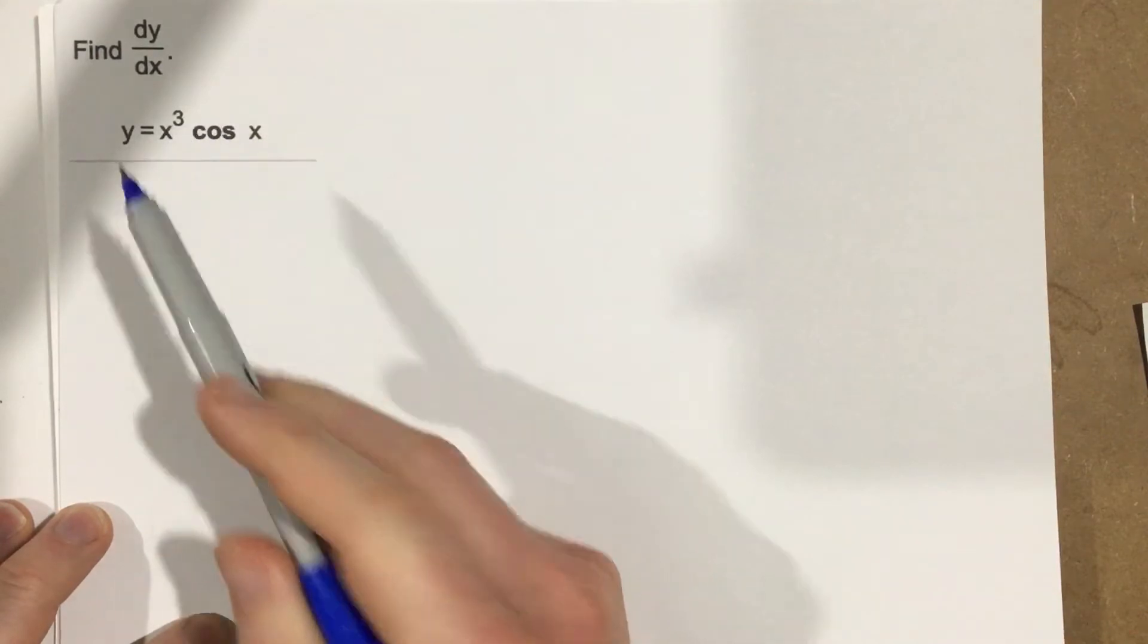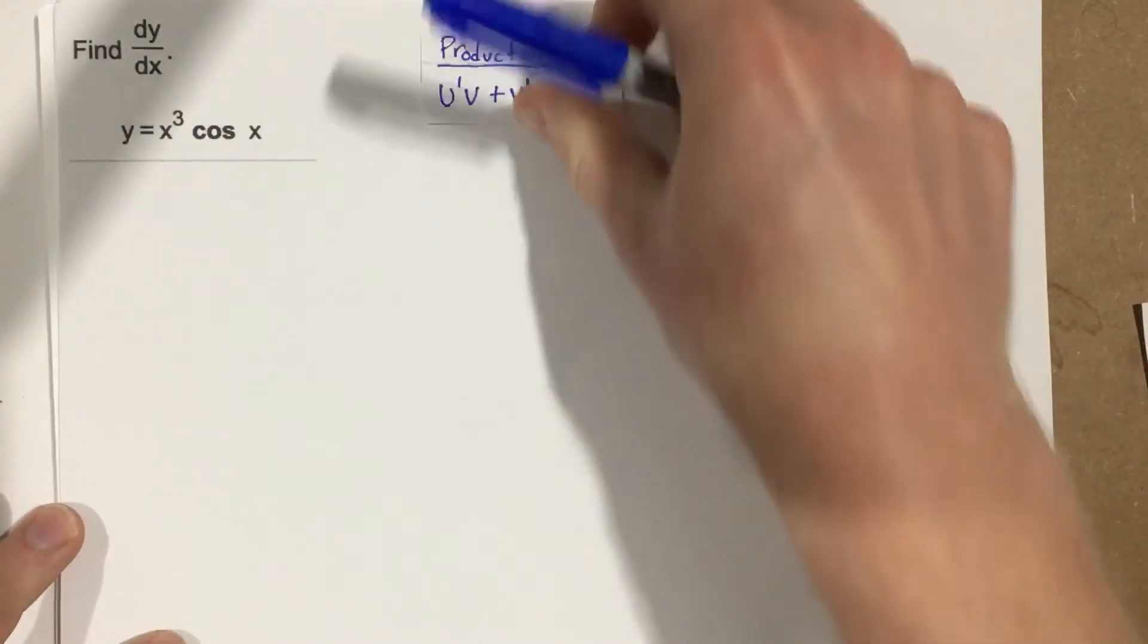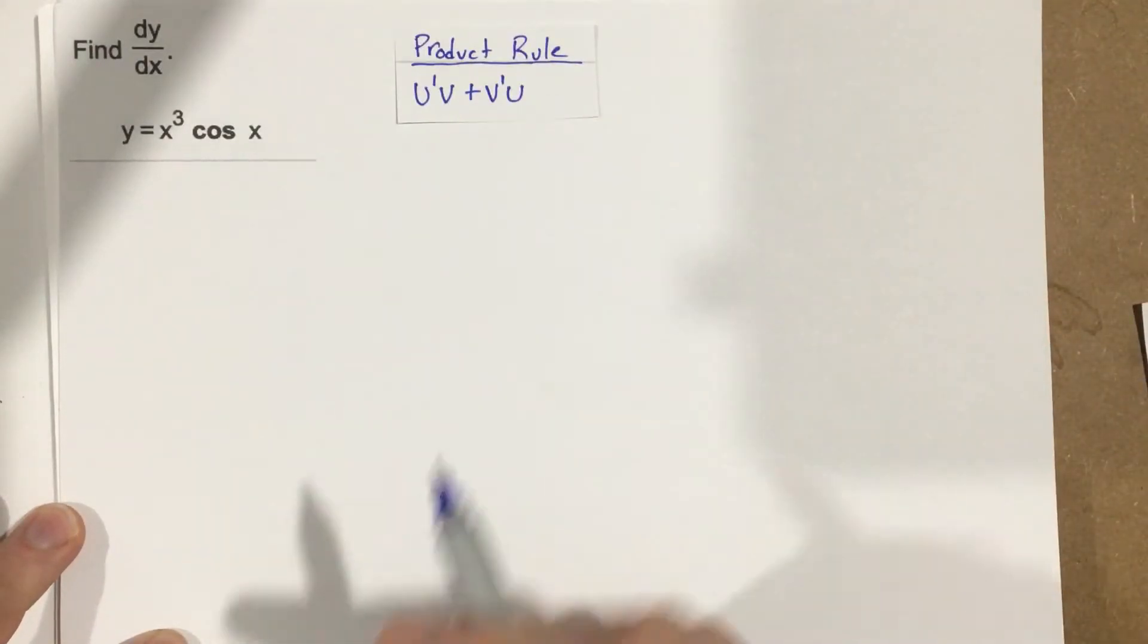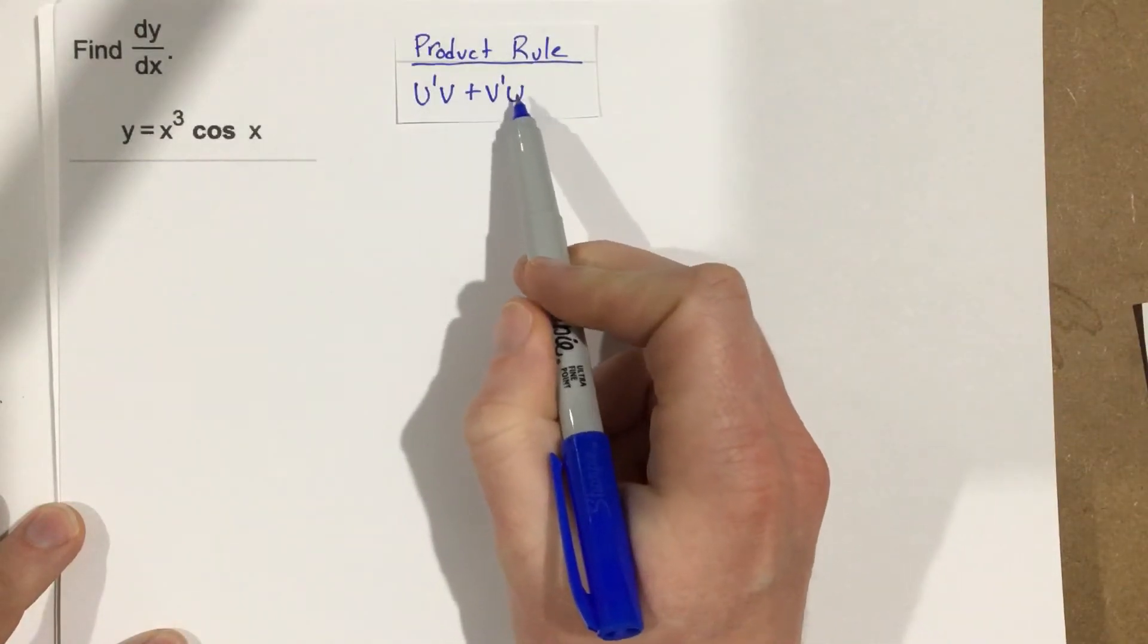Because we have a multiplication, we're going to need to pull out the product rule. The product rule states that we're going to take u prime times v plus v prime times u.